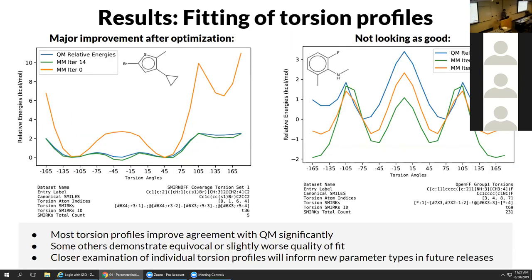Regarding train-test splits on torsional profiles - we're not doing those right now. That's kind of what the validation is for. One reason is our set of molecules doesn't cover our parameters that many times - if each parameter was covered a hundred times I'd be more comfortable doing a split. We also have lots of additional calculations not yet used for fitting that we're going to be testing on.